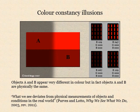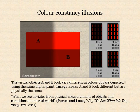When the fallacy in the formula is corrected, the statement becomes: the virtual objects A and B look very different in colour, but are depicted using the same digital paint — which is true, but not surprising.